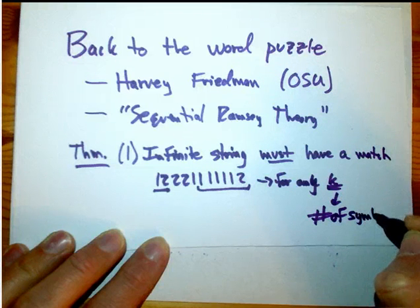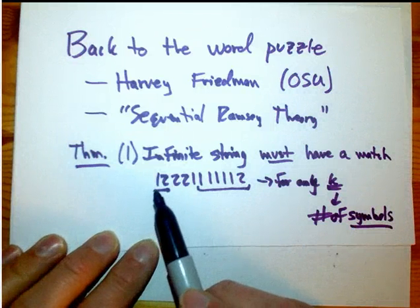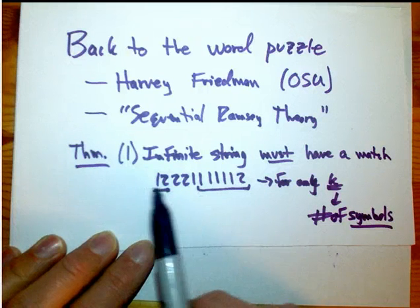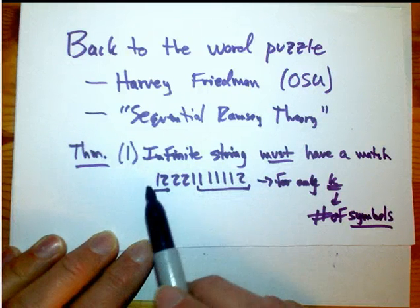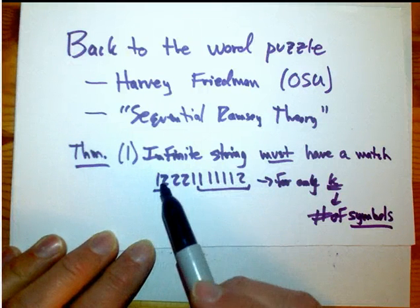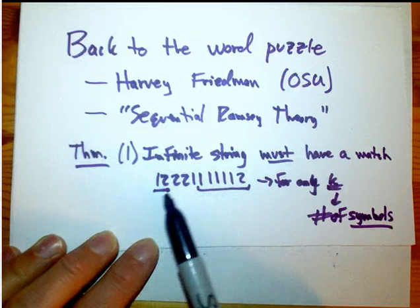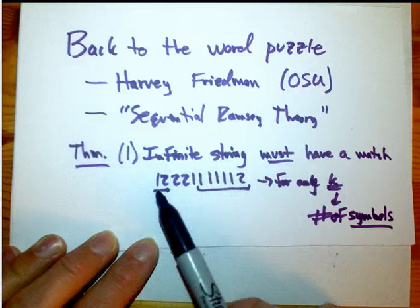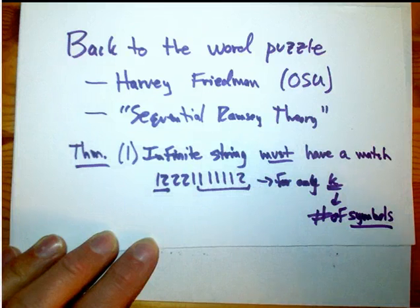You allow yourself a fixed number of letters to play with — I was using A's and B's, but he uses ones and twos. No matter what the symbols are, this is K equals two, using just two different symbols. And the theorem is you're going to get trapped: if you're trying to avoid a match, you're not going to be able to do it forever.